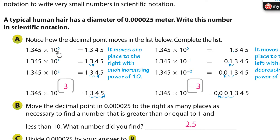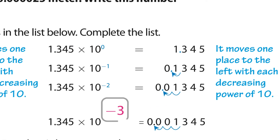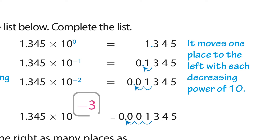If we have times 10 to the 0, the decimal stays put. Times 10 to the first, the decimal moves to the right one. Times 10 to the second — that's times a hundred — so the decimal moves twice to the right. To the third power it moves three times to the right. Now, to the negative first power, instead of moving to the right it moves to the left. To the negative second power it moves to the left twice. So decreasing powers of 10 mean moving the decimal to the left — to the negative third means moving the decimal three times to the left.